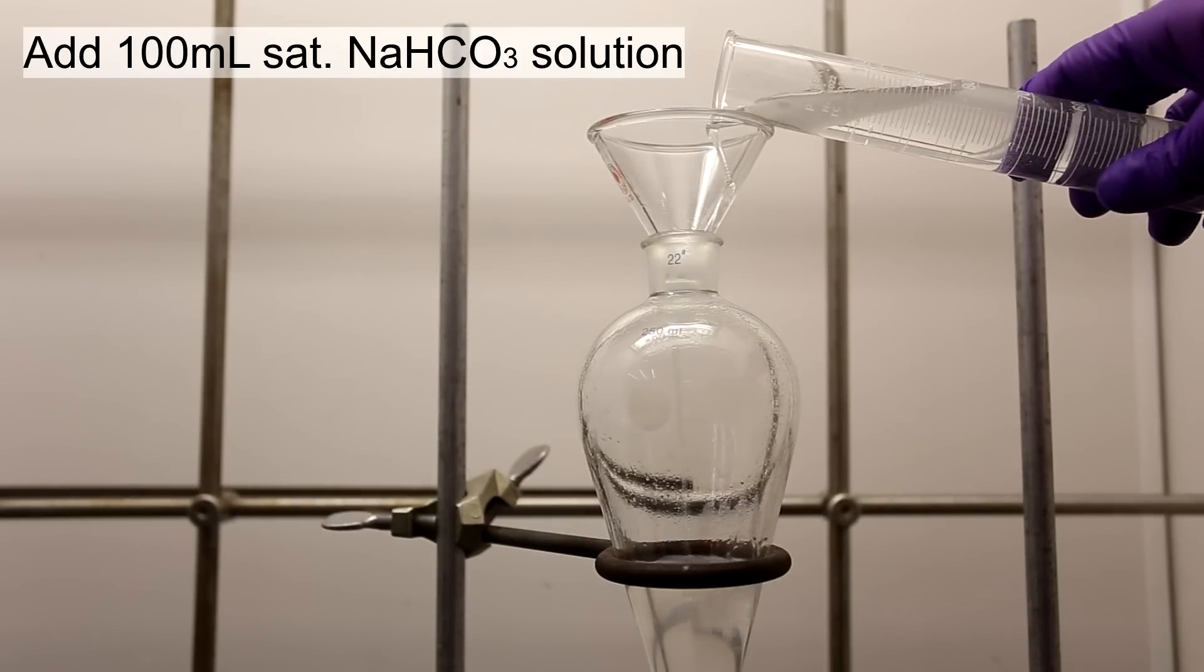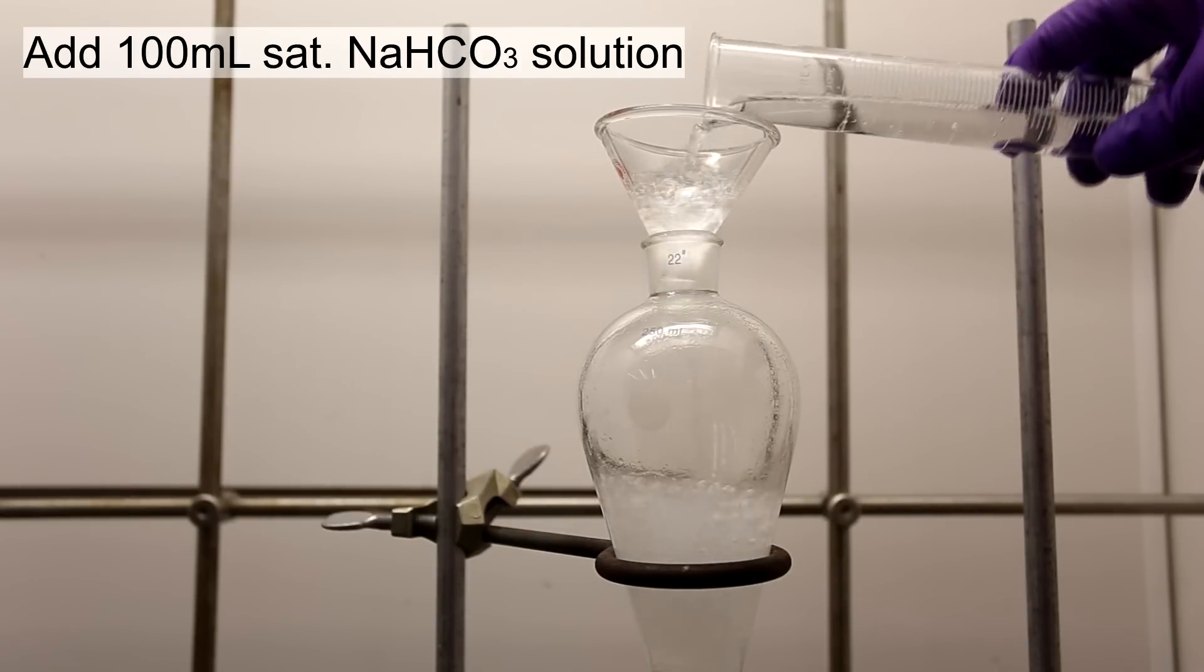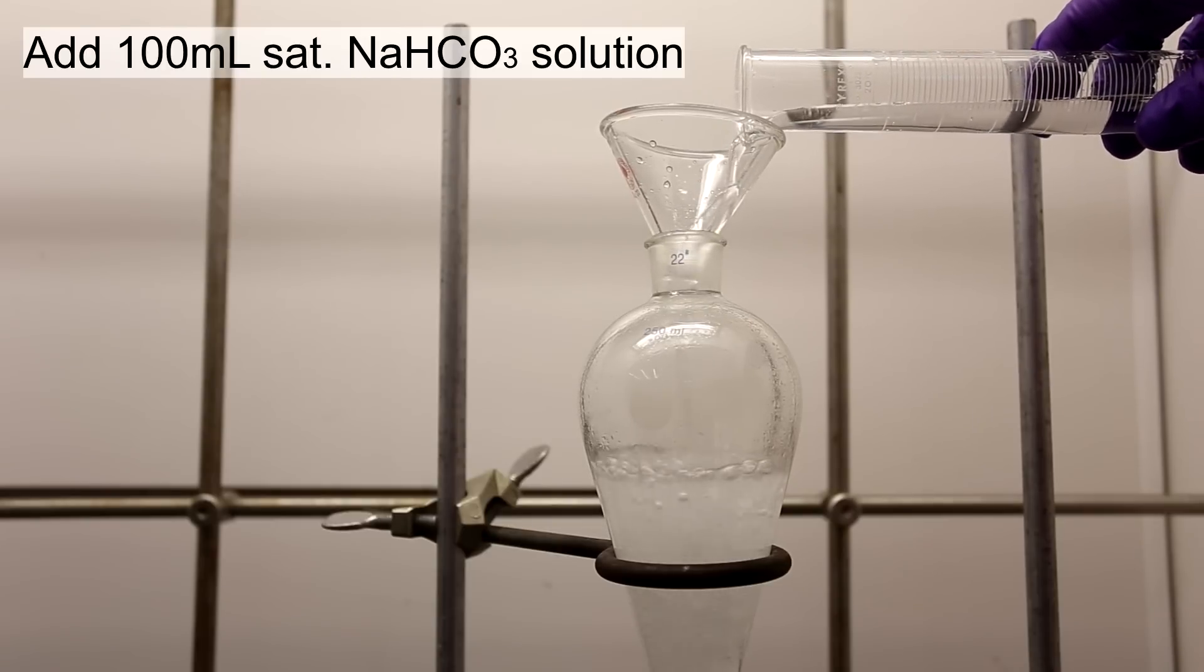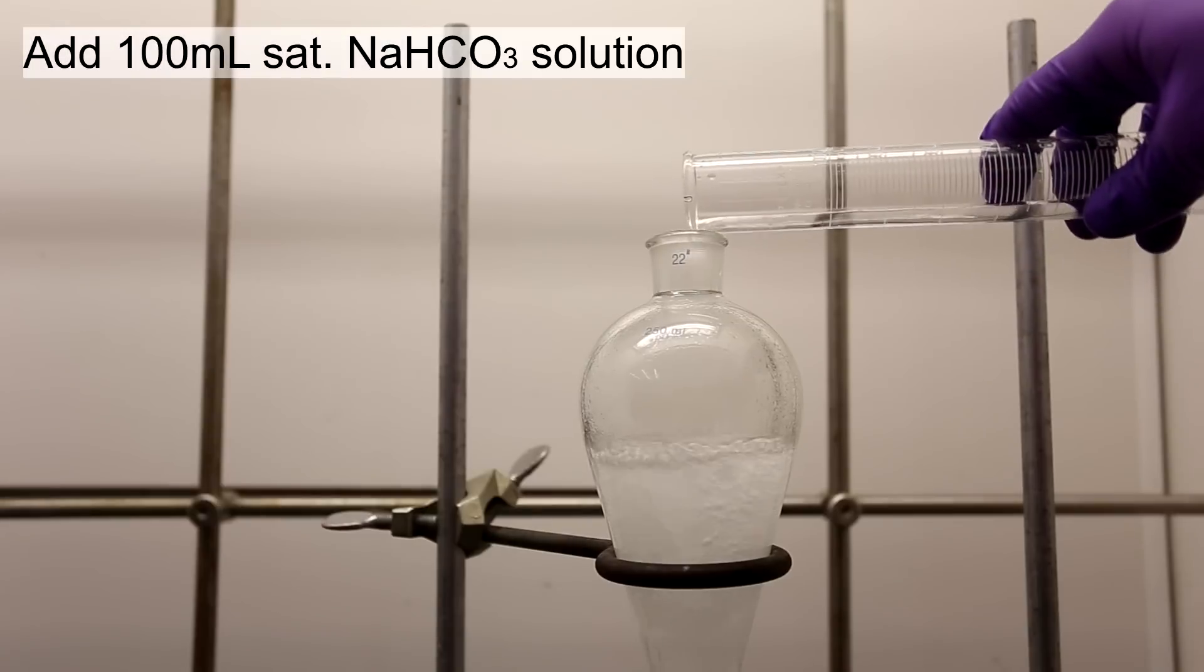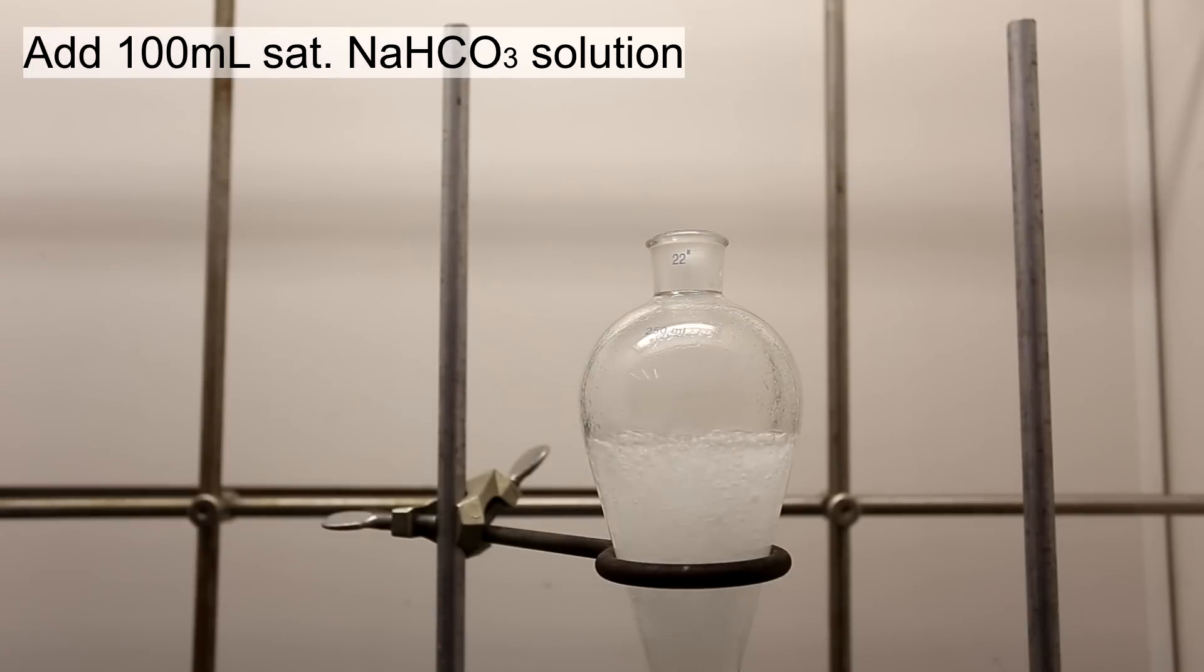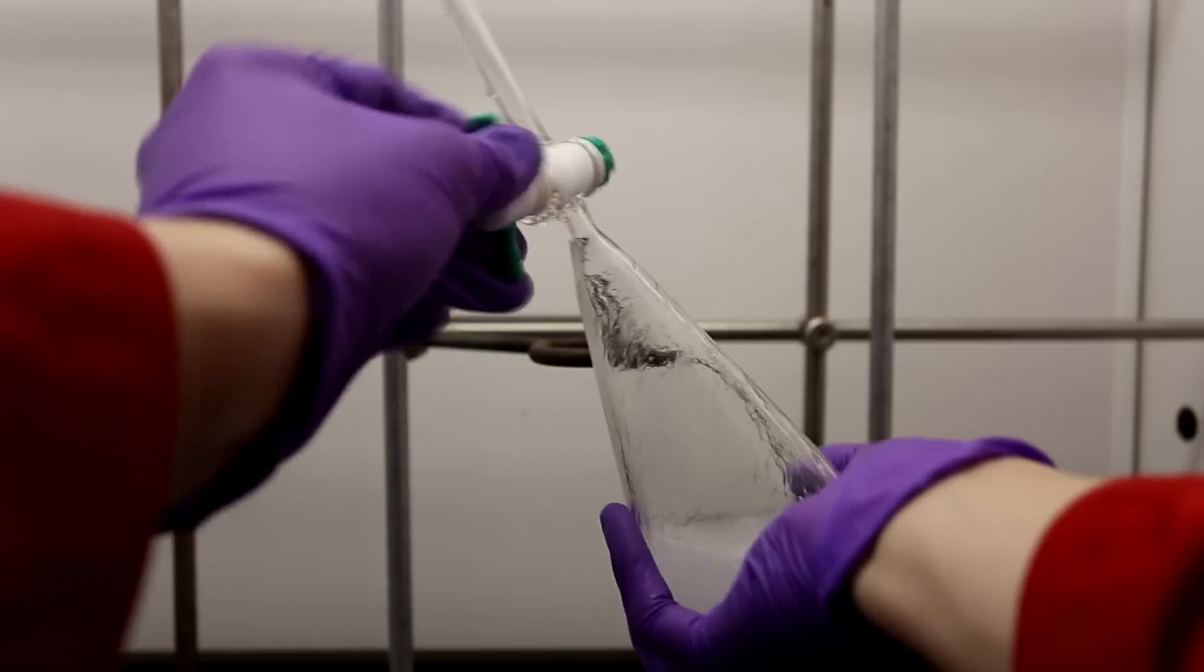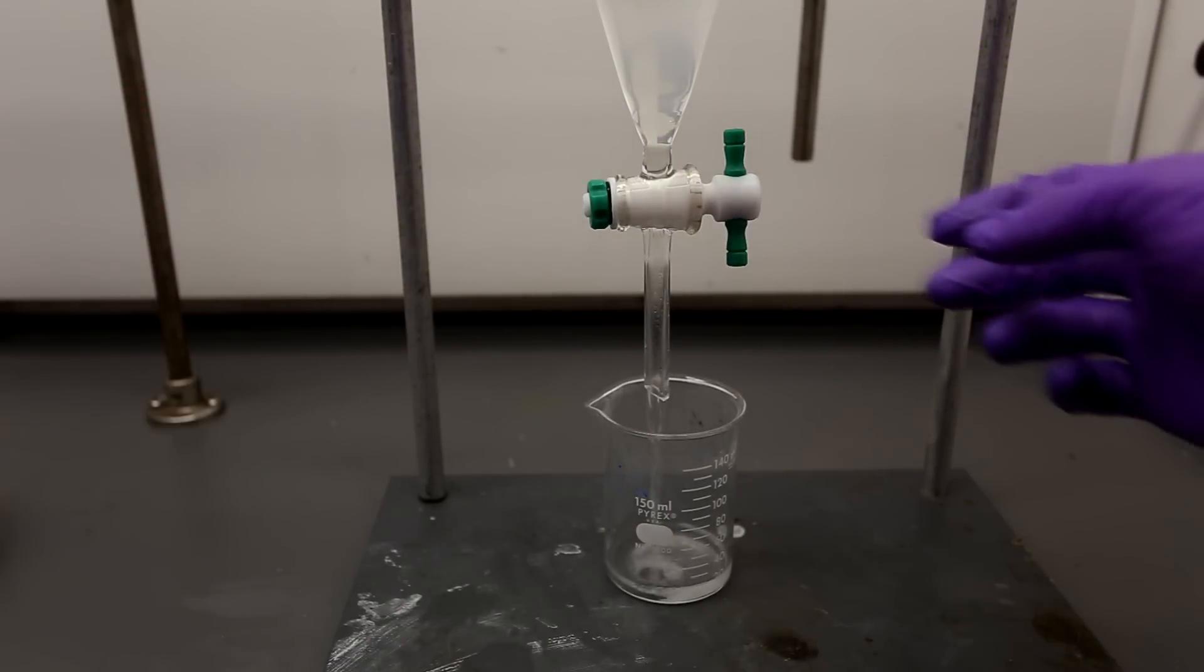100 milliliters of saturated sodium bicarbonate solution was added. The reaction of the remaining acids with the sodium bicarbonate is quite vigorous. So before proceeding ahead to capping and shaking the separatory funnel, be sure to allow the reaction to calm down a little. Once the reaction becomes less vigorous, the separatory funnel is again capped and shaken vigorously with frequent venting. The layers are allowed to separate and again the bottom aqueous layer is drained and removed.